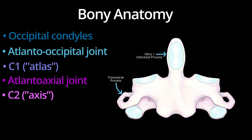Like C1, C2 has two transverse foramen which contain the vertebral arteries. Two superior articular processes articulate with the lateral masses of C1 to form the atlanto-axial joint. The two inferior articular processes articulate with C3.